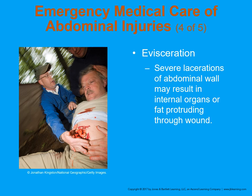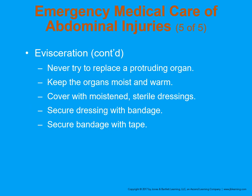In this illustration we see an abdominal evisceration — this is a simulated model, but you can see how it's done. We don't want to push any of that back in. Cover it — you want to moisten the dressing because this tissue lives in a moist environment. Sterile saline only. Just get it moist, wring it out if needed, and cover it up. Lint-free if possible — old burn sheets or abdominal pads work well for any evisceration. Don't put the organs back in; we don't know where they go for certain. Cover it up and take the patient to the hospital.